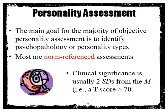The main goal for the majority of objective personality assessment is to identify either psychopathology or personality types. Most of these are norm-referenced assessments, meaning your score is compared with a norm group meant to represent the population, such as the United States. Clinical significance is determined at usually two standard deviations from the mean, which would be a T-score of at least 70. The MMPI has slightly different cut-offs: a T-score of 65 is clinical significance.